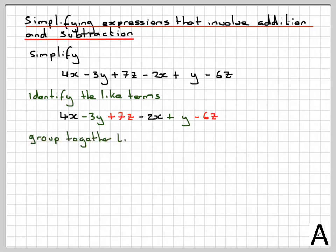The next thing you should do is try to group them together. So if we group together 4x minus 2x, minus 3y plus y, and 7z minus 6z.